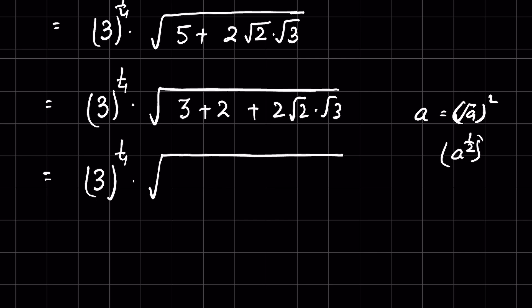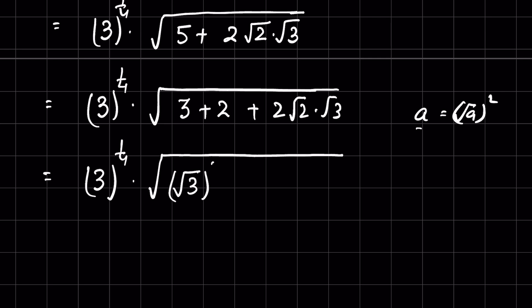When a is raised to a power and then multiplied by 2, the 2s cancel. So a can be written as √(a²). Therefore, 3 can be written as √(3²) and 2 can be written as √(2²), giving us √(3²) + √(2²) + 2×√2×√3.